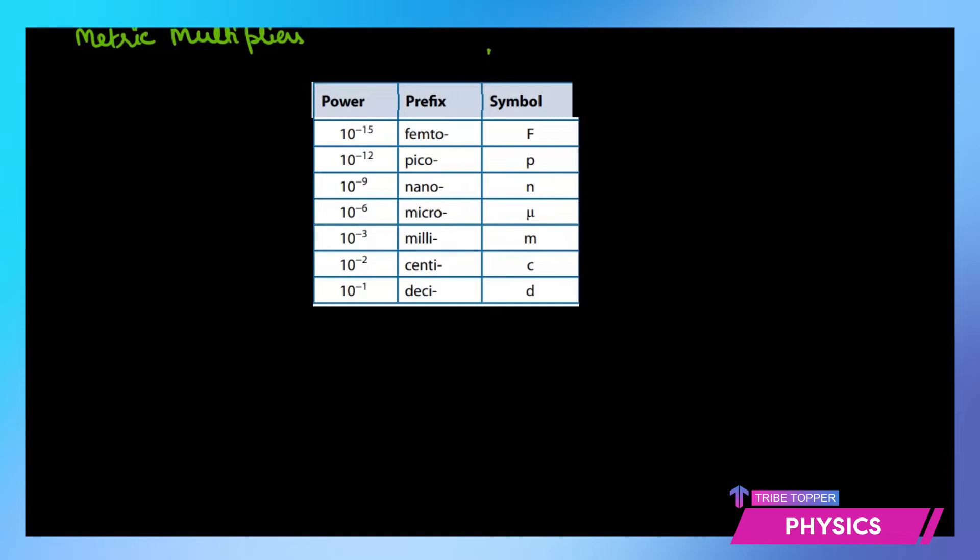Another thing that we need to know because there will be a lot of conversions required: metric multipliers. Metric multipliers means when you have something very very small or very very big. So we have 10 to the power negative 15, this is a very small unit which is femto or sometimes also termed as fermi. Then you have 10 to the power negative 12 which is pico. So picometers when you go to meters you have to multiply it with 10 to the power negative 12.